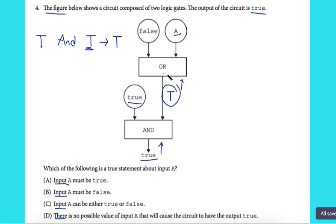Right here we have the OR gate, and we have false. We have false or A. False or A gives us true. So if we have an OR gate and we want to have true as output, we have to have at least one true statement.